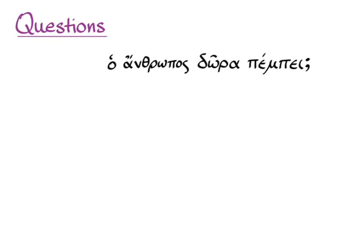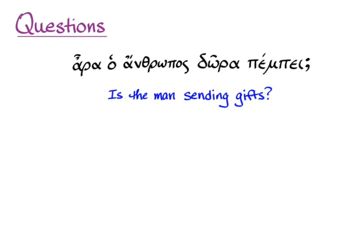So 'ho anthropos dora pempei' with a question mark means 'is the man sending gifts?' Sometimes Greek will have the particle 'ara' at the beginning to alert you that you're embarking on a question that will have a question mark at the end, but it doesn't have to have it. 'Ara' is helpful when you see it because it alerts you to watch for the question mark, but it isn't necessarily going to be there.